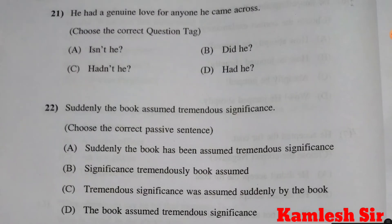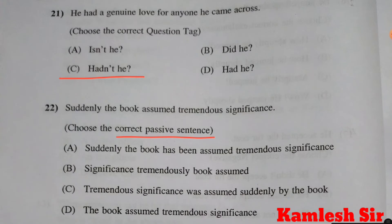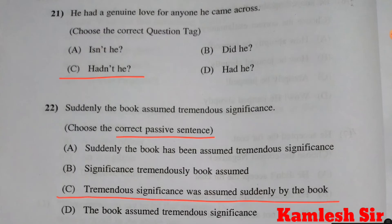Question number 21: He had a genuine love for anyone he came across — choose the correct question tag. The right answer is C: hadn't he. Question 22: Suddenly the book assumed tremendous significance — choose the correct passive sentence. The correct answer is C: tremendous significance was assumed suddenly by the book.